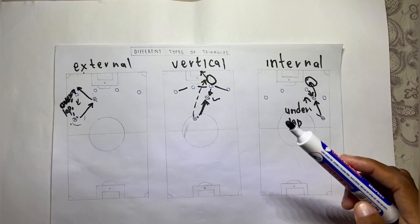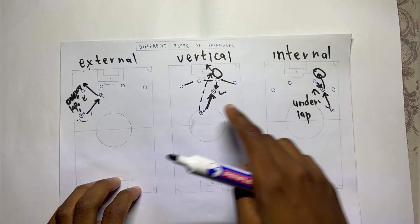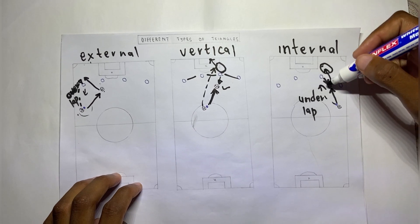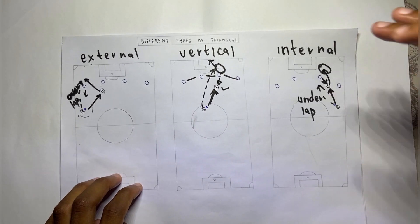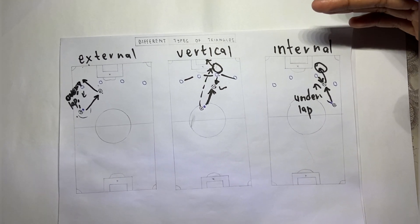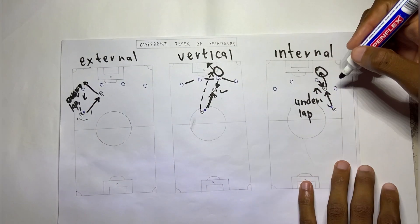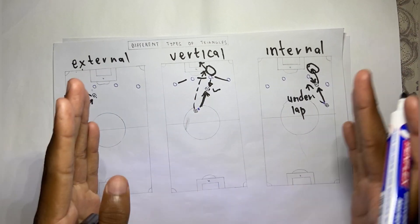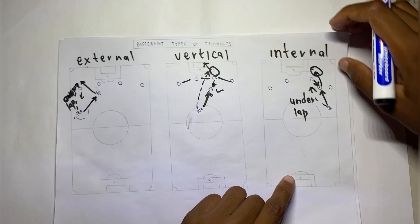When a football player overlaps or underlaps, they usually pass the ball to a teammate and run beyond that player so that they can receive the ball again or are ready to receive the ball into the space created, dragging other defenders out of their position.